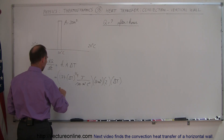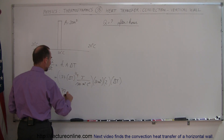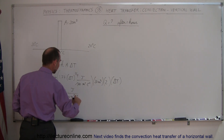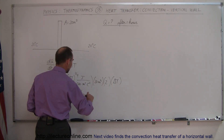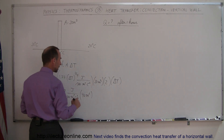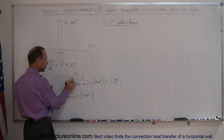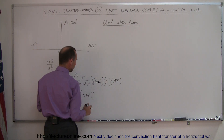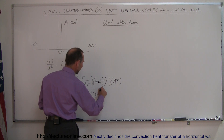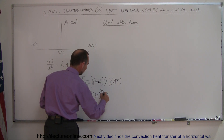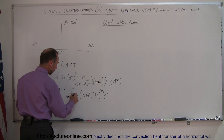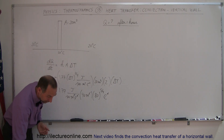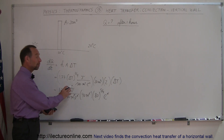So this equals 1.77 joules per second per meter squared per centigrade degree, times 40 meters squared — the meter squared will cancel out. Since we've already accounted for the centigrade degrees in the delta T to the 1.25 power, we have 80 to the 5/4 power times centigrade degrees. The meter squared cancel, the centigrade degrees cancel, and we're left with joules per second, which is watts.